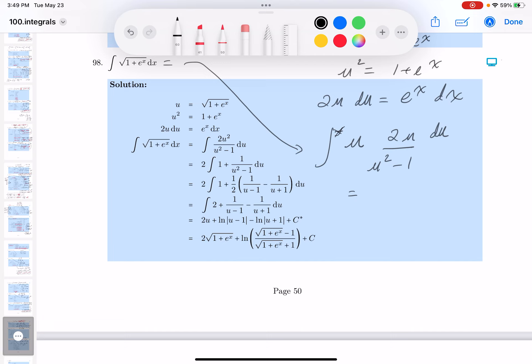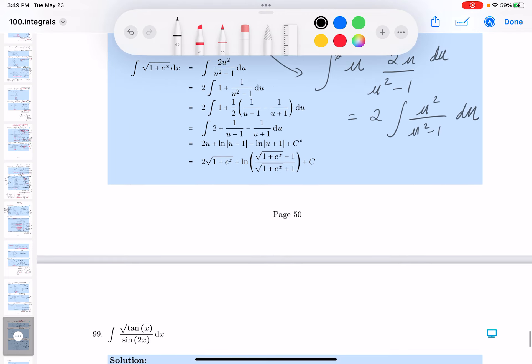Alright, I'm seeing partial fractions again. Let me just carefully go through that with you. So you can get 2, you get u squared over u squared minus 1, du. I can go through long division now.